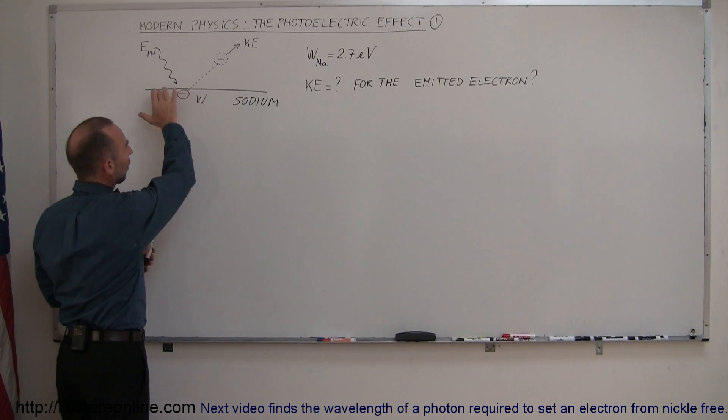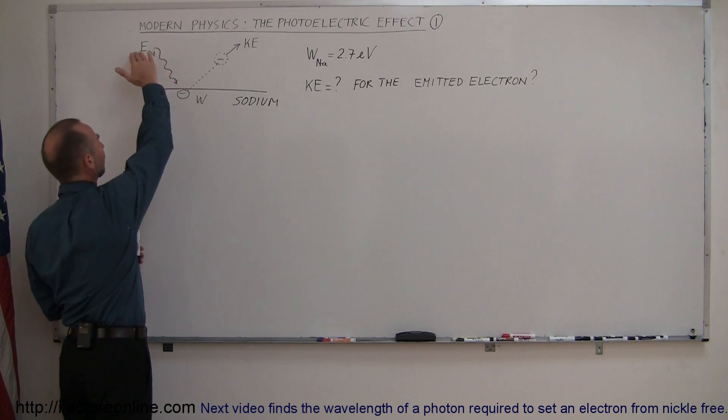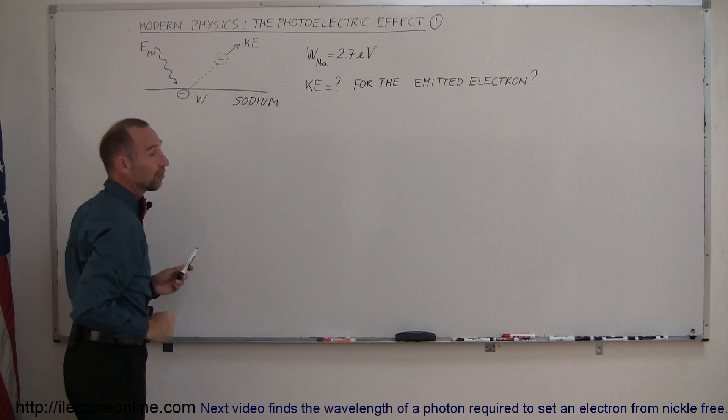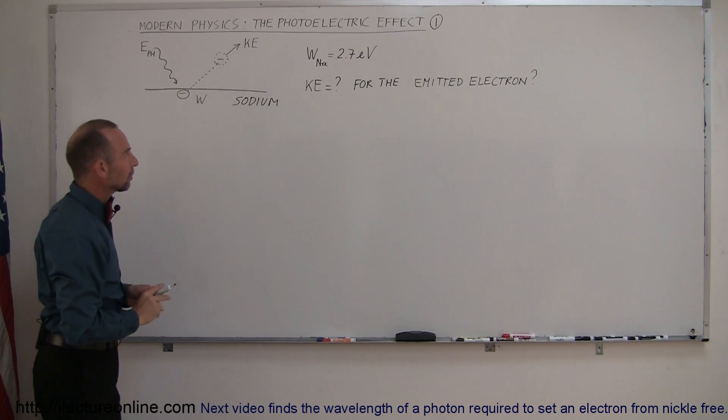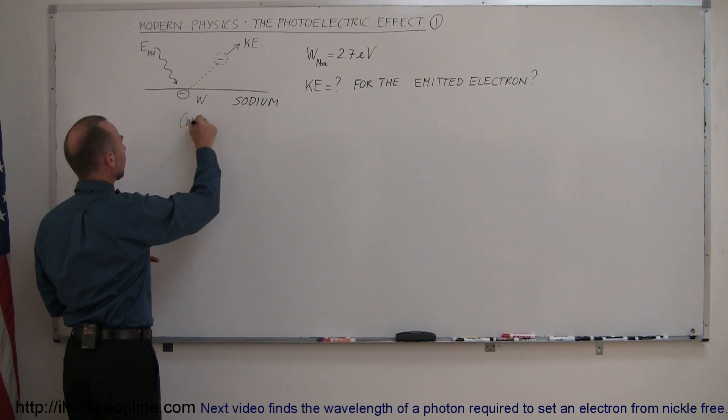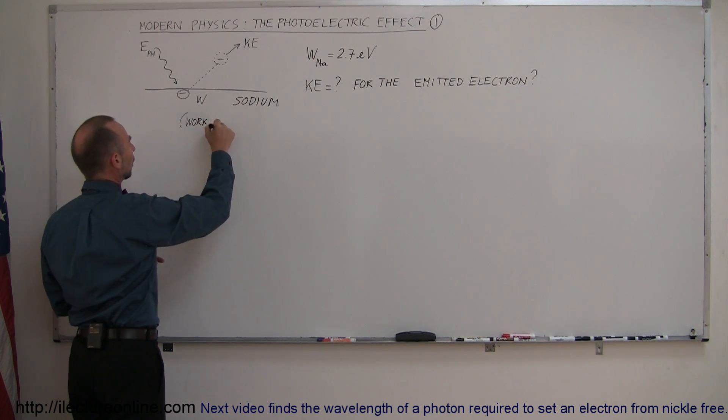When we have these electrons near the surface, if a photon comes down and hits the electron, it could impart enough energy on the electron for the electron to jump free from the metal. But in order to do that, you have to overcome what we call the work function. So I use the letter W to indicate the work function.